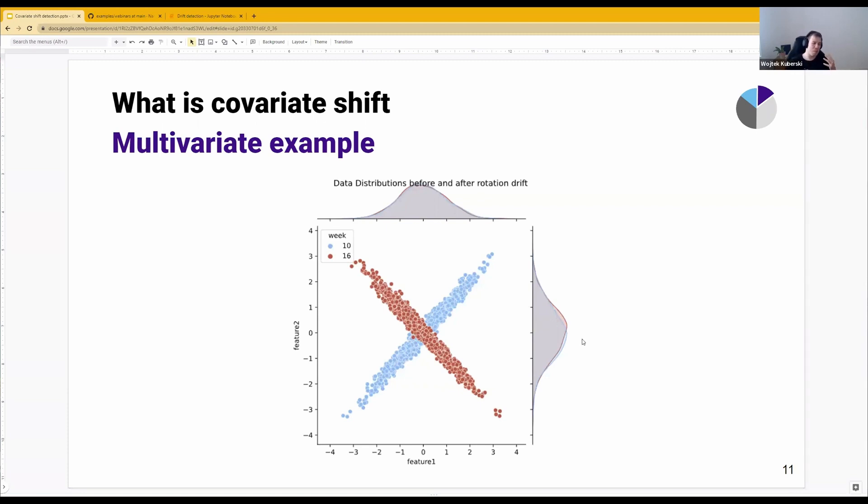But of course, our joint distribution is completely different, and the model is going to make terrible mistakes because it assumes that feature one is feature two and vice versa. This is something that we absolutely need to be able to detect, and it's something that can actually let us identify what is the potential root cause of the performance drop.